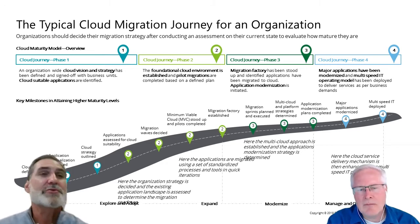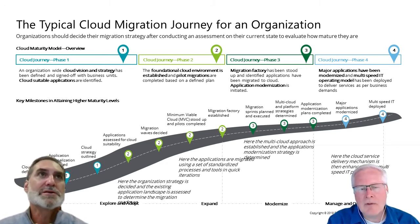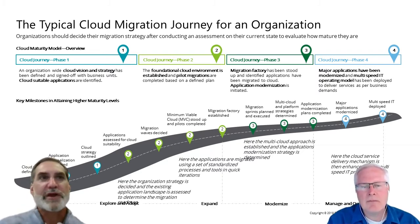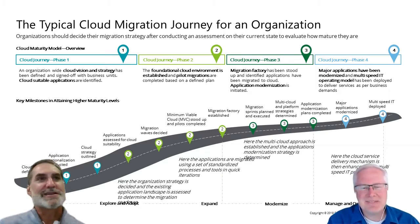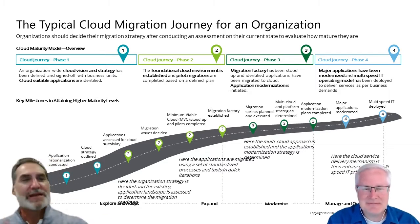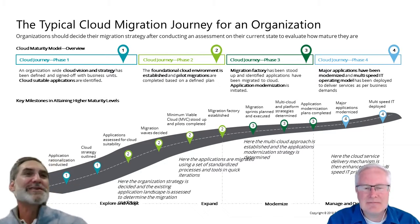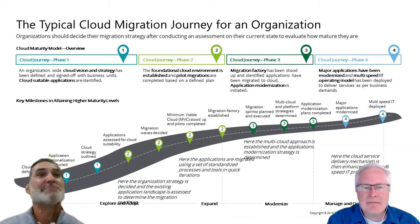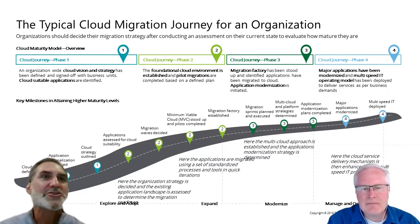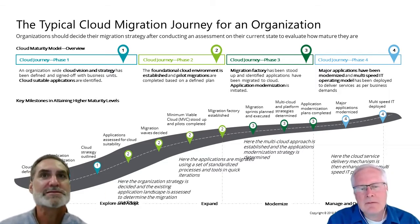It's critically important to do that assessment, because what you don't want to do — and I'll use a very extreme example — you don't want to pick the mainframe as the first system to move to the cloud. There's a lot of things that need to be done to get that ready. You want to pick something on the other end of the spectrum: a little more self-contained, more modern technologies, maybe public-facing web applications or email systems.